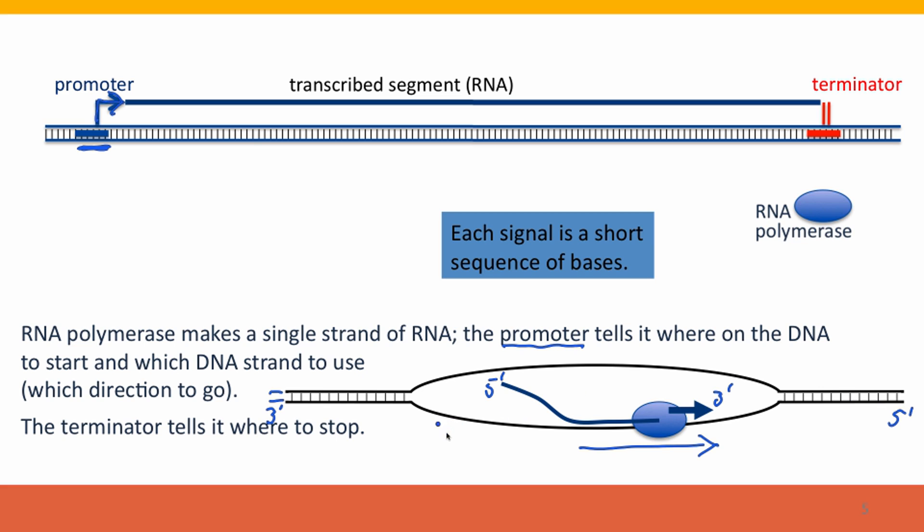If RNA polymerase were to use the top strand, it would have to be going in that direction. And so a function of the promoter is not just to say start here, but to also say either start here and use the bottom strand so you're going that way, or start here and use the top strand so you're going this way. And again, the terminator tells RNA polymerase where to stop.